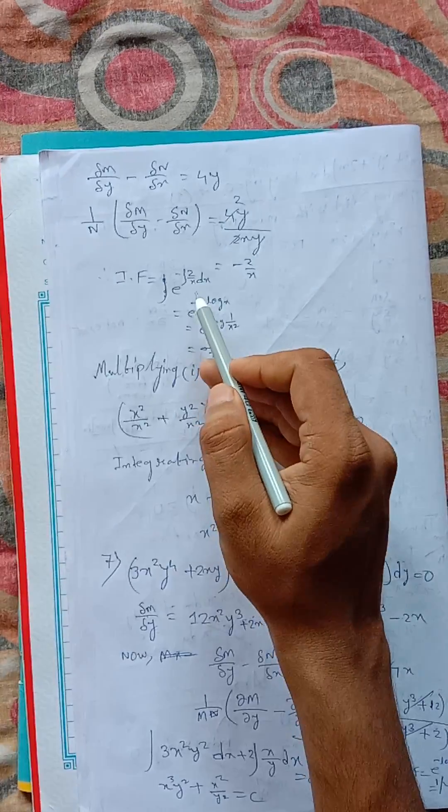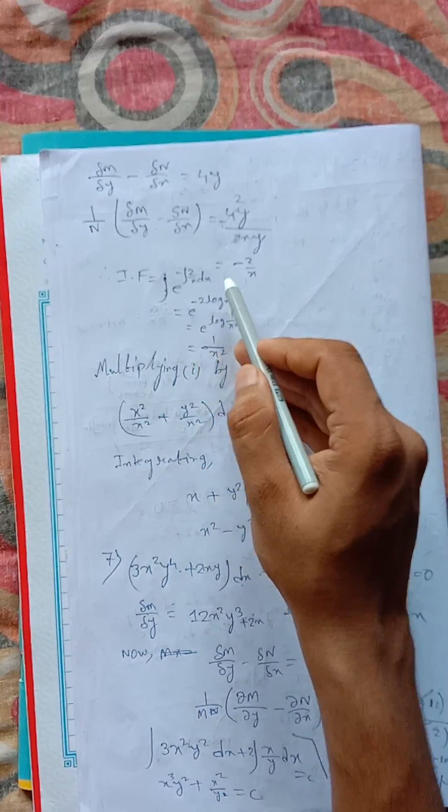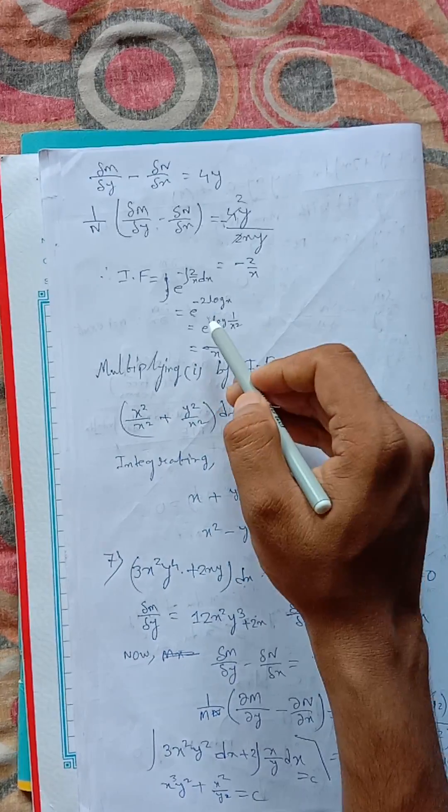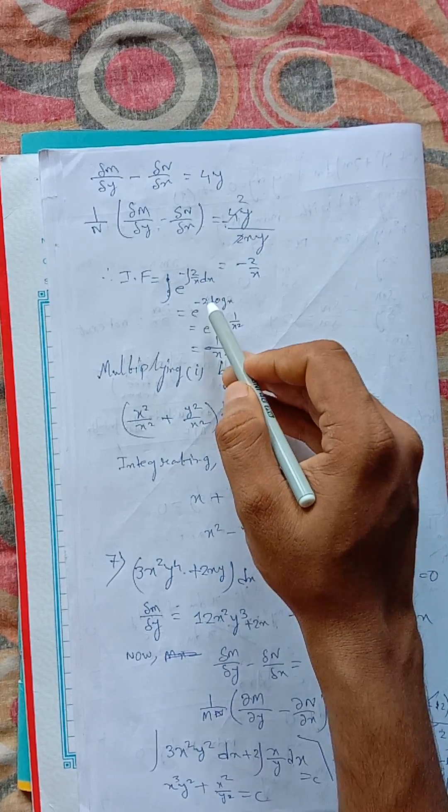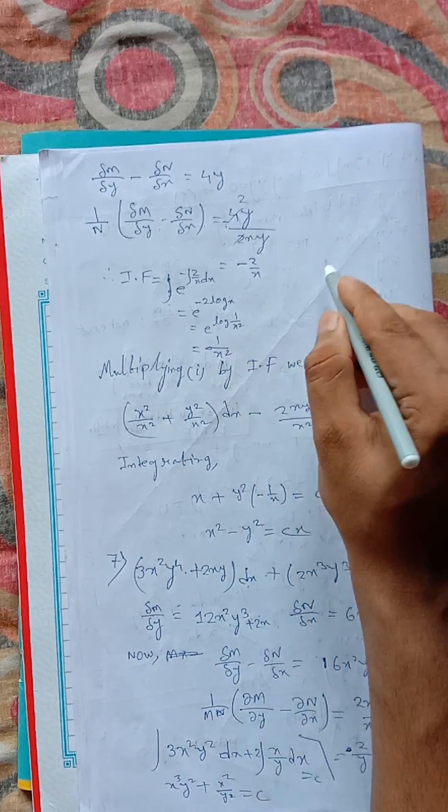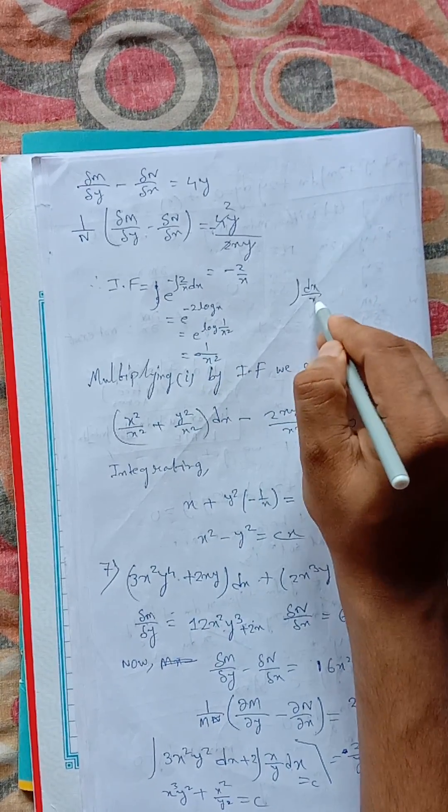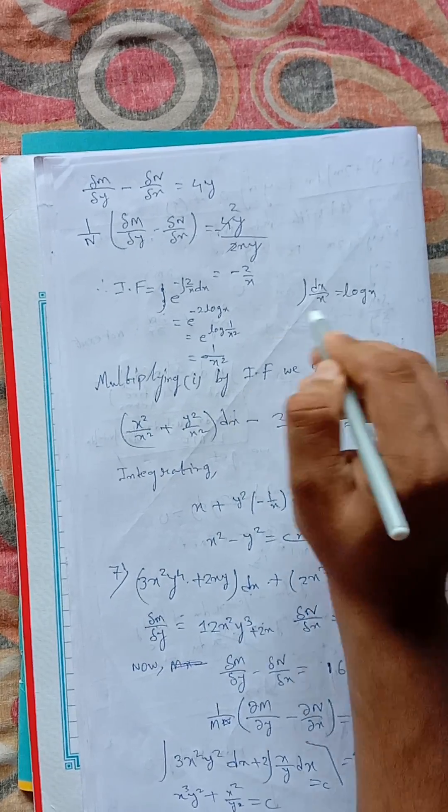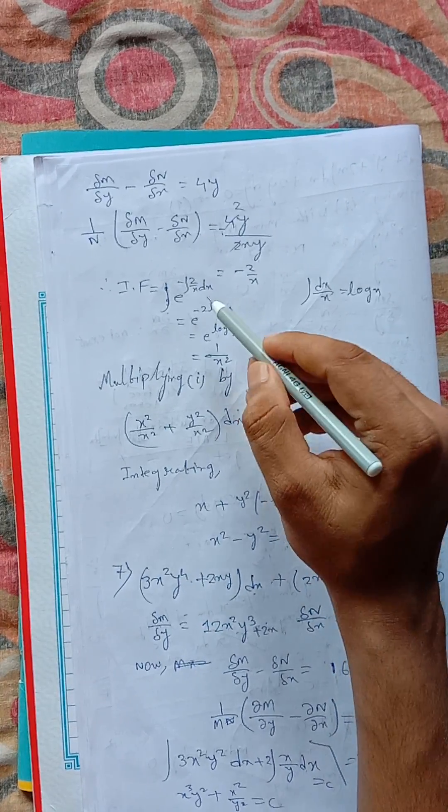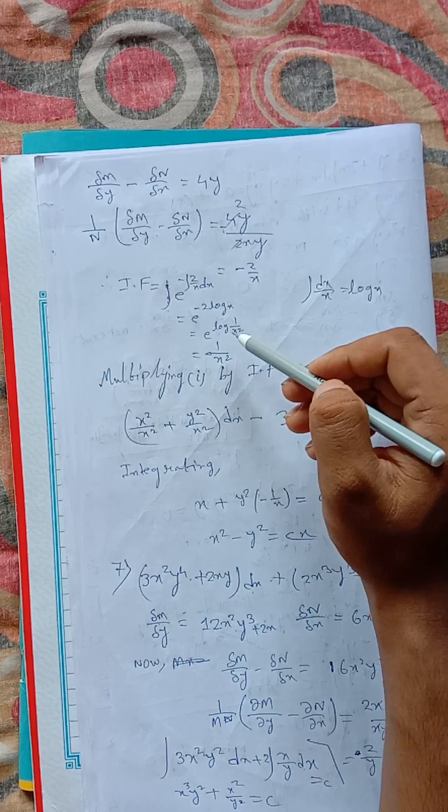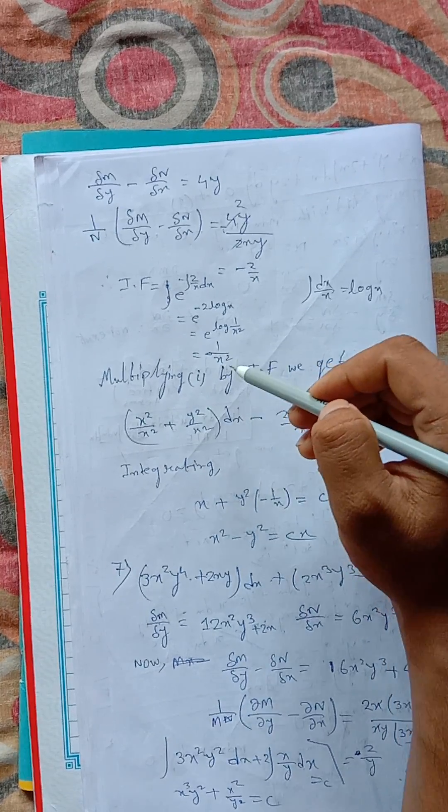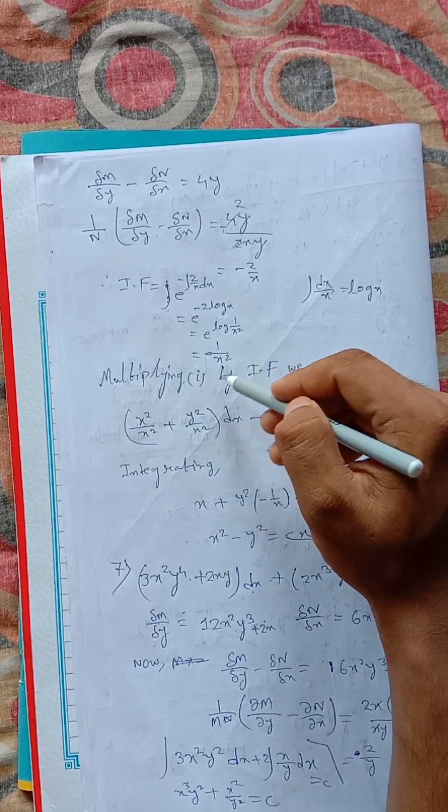Then integrating factor is e to the power integration minus 2 by x dx. Integration dx by x equals log x, so minus 2 log x. This is e to the power log 1 by x square, thus 1 by x square.